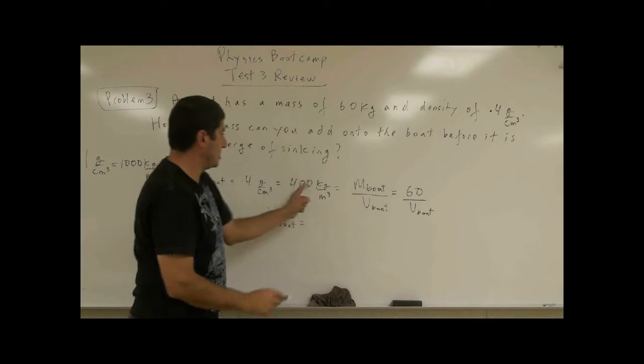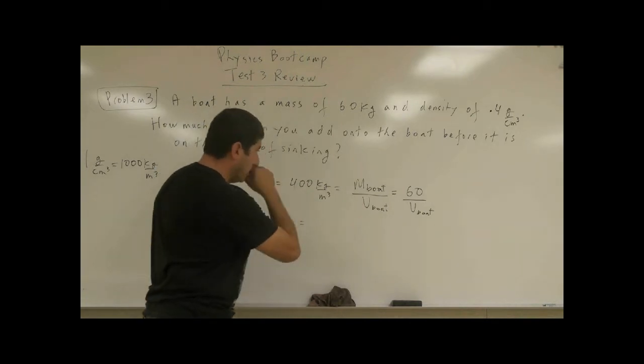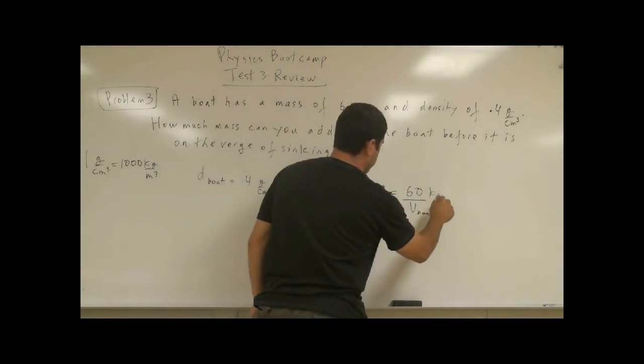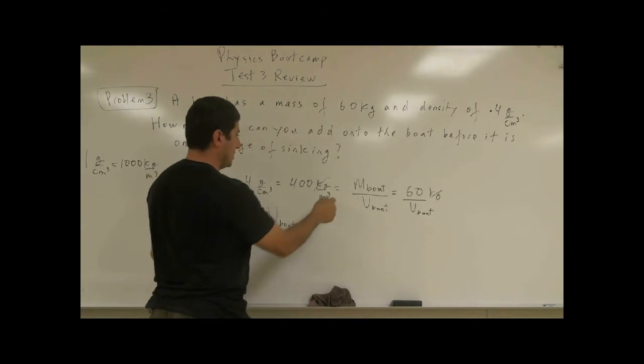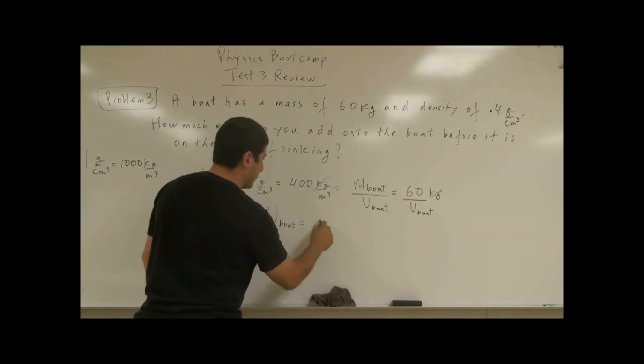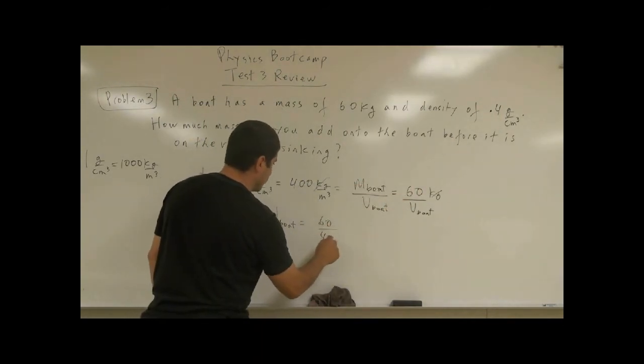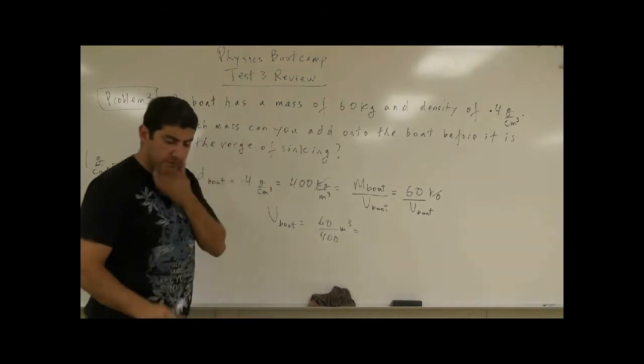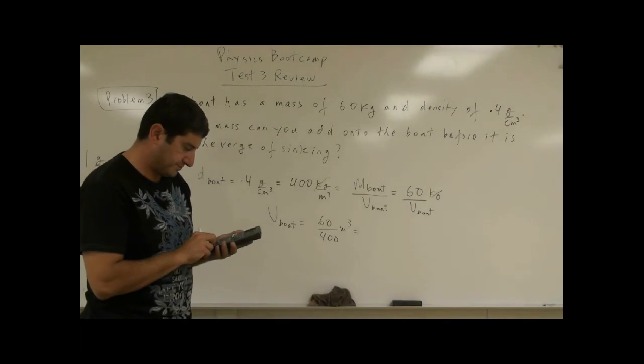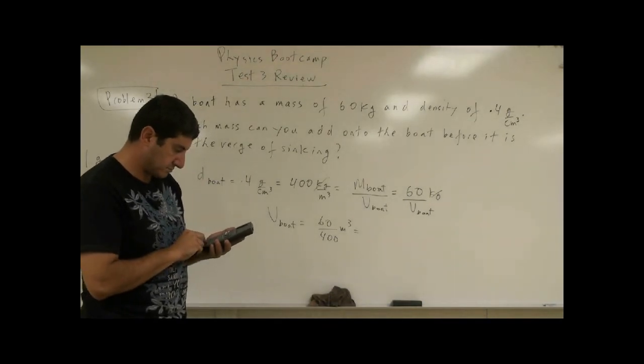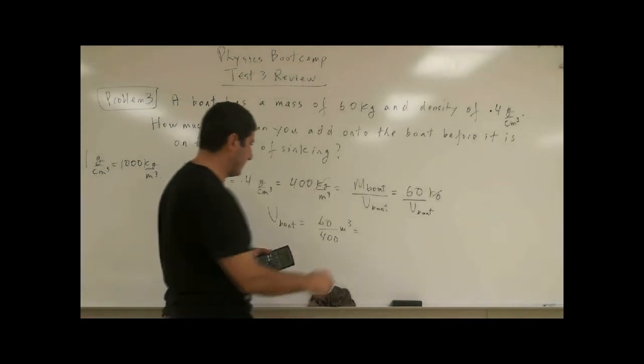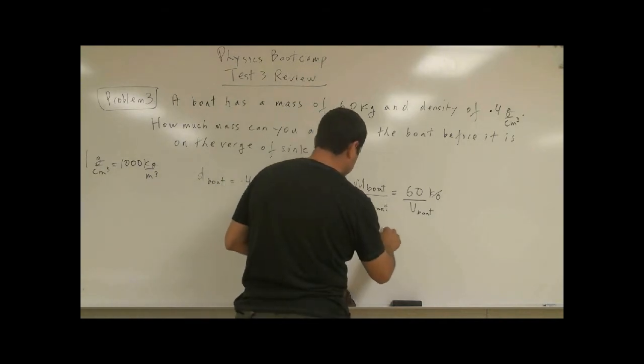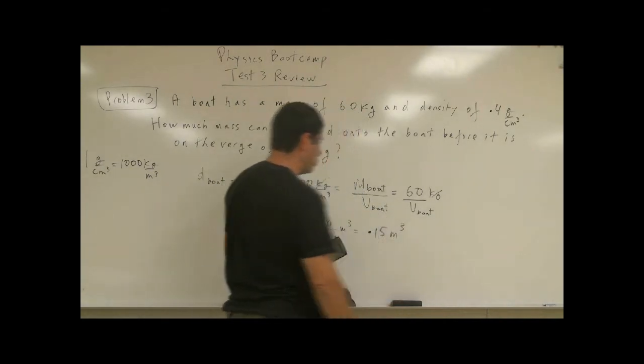The volume of the boat is 60 divided by 400. So since this is kilogram, kilogram, kilogram cancel, meter cubed goes up there. You get volume of the boat is 60 over 400 meter cubed. So what is that equal to? 0.15 cubic meters.